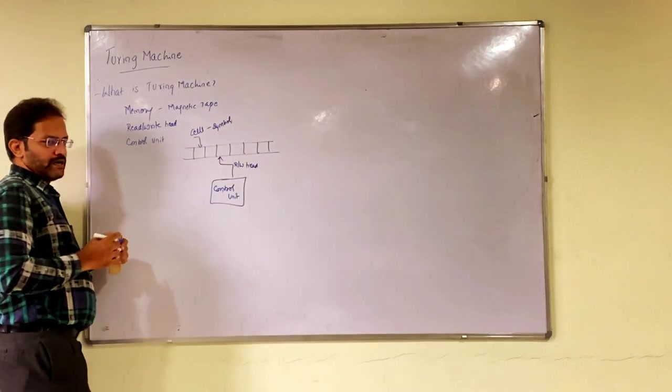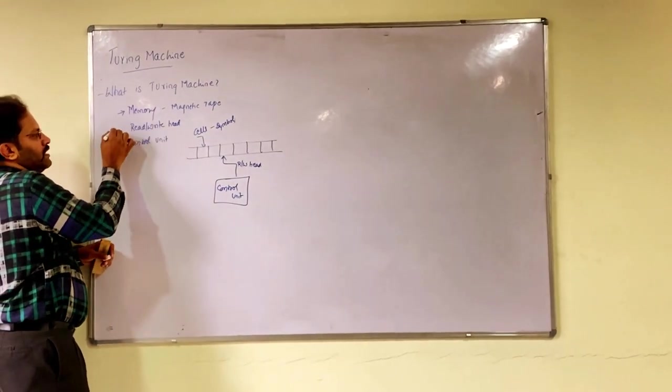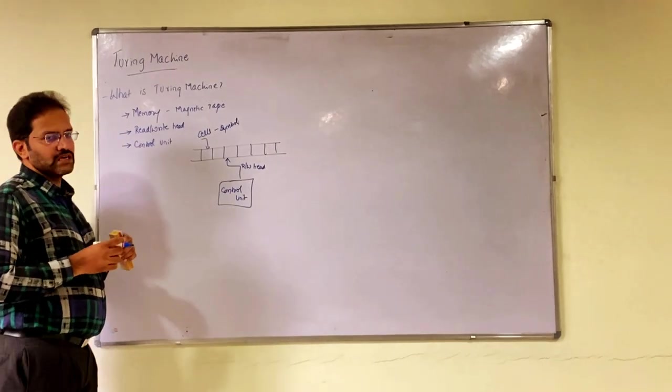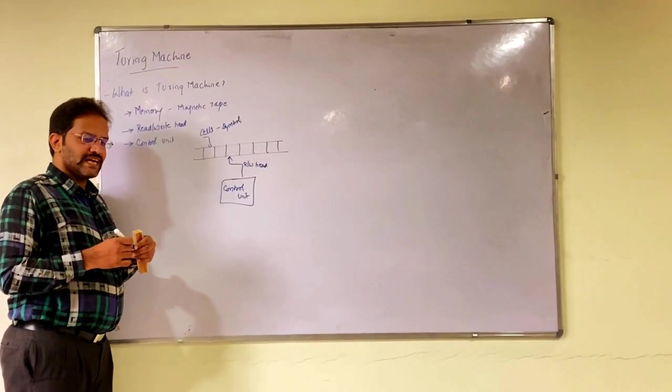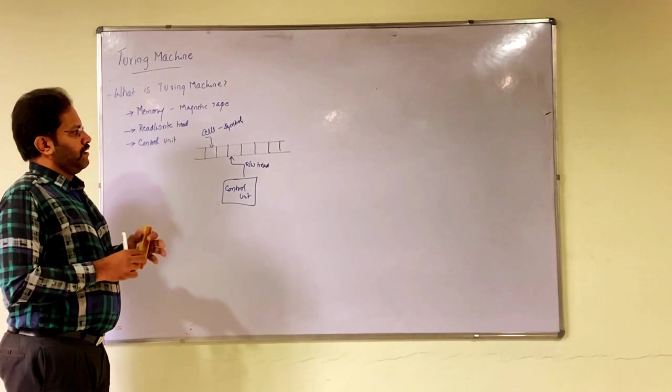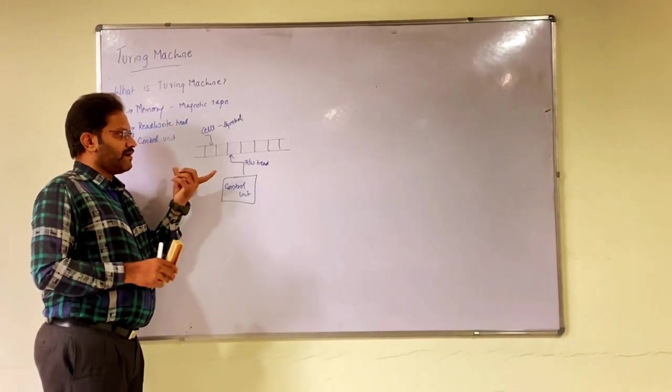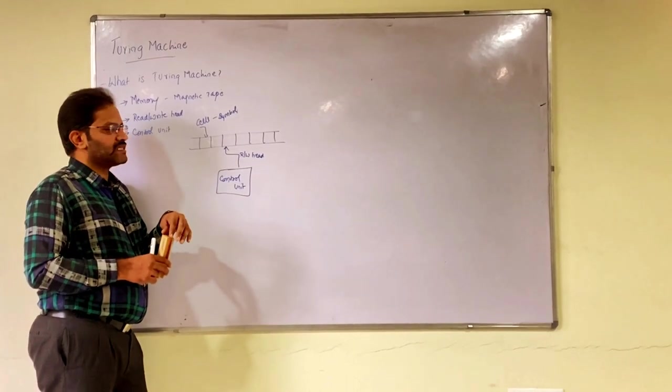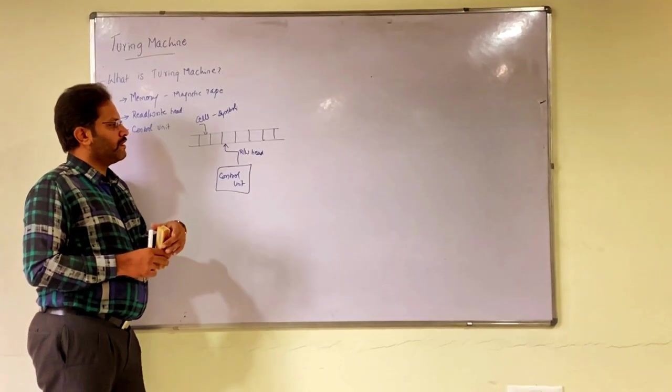So there are three components of Turing machine. First is memory or magnetic tape, second is read-write head, third is control unit. As I said, I just repeat again, magnetic tape has so many cells where each cell is capable of storing one symbol.